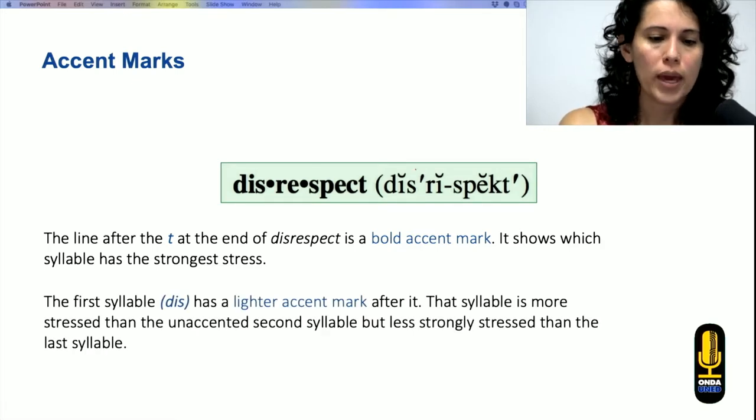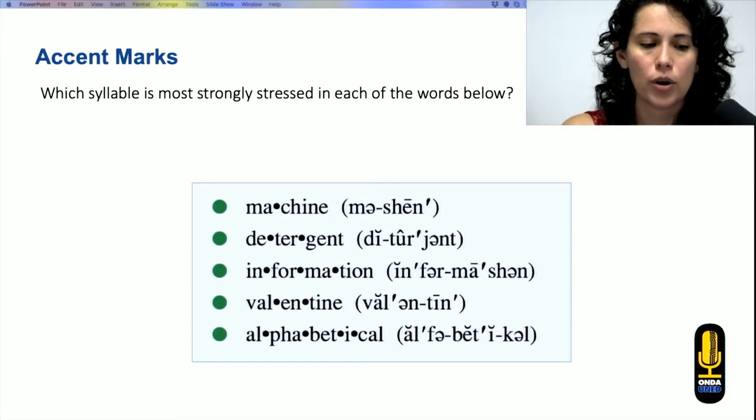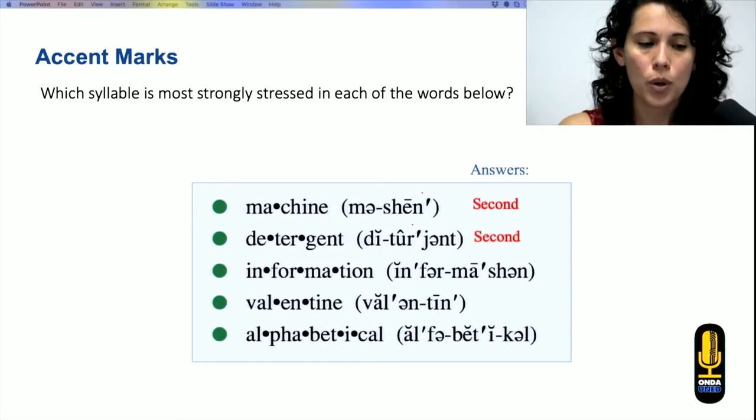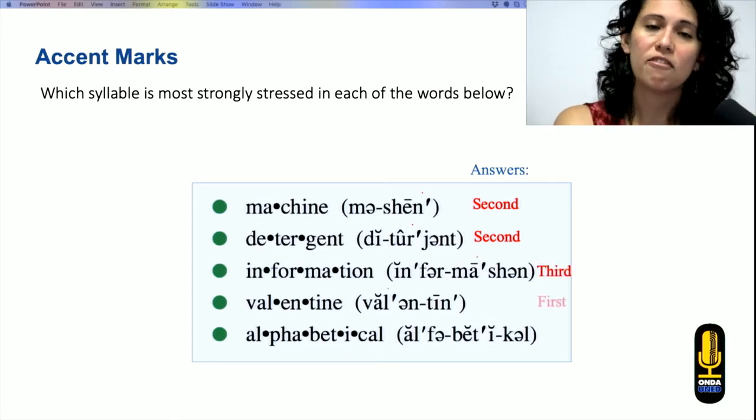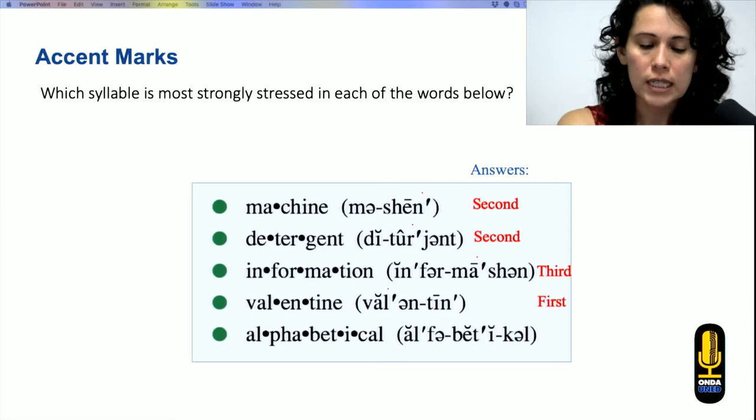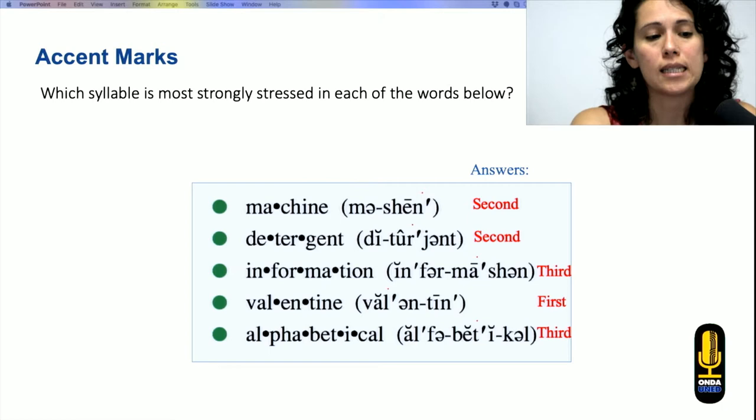Then we can also, well, let's see, here I have some examples. For example, the word machine, and according to this, the strongest syllable is the second one. In detergent will be the second one, in information, the third one, in valentine will be the first, and in alphabetical will be the third syllable.